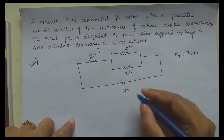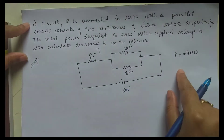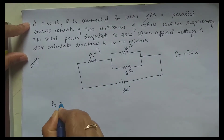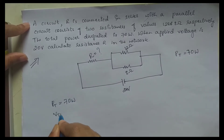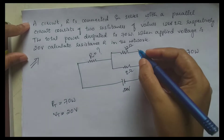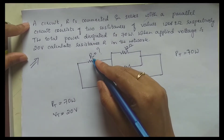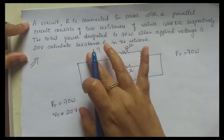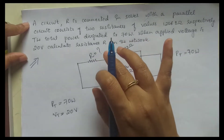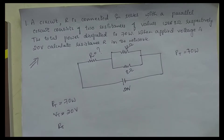We have to find the resistance R. We know two things: power dissipated PT is equal to 70 watts, and total voltage VT is equal to 20 volts. We also know the resistance of the parallel circuit. To find R, we first need to find the value of total resistance RT.